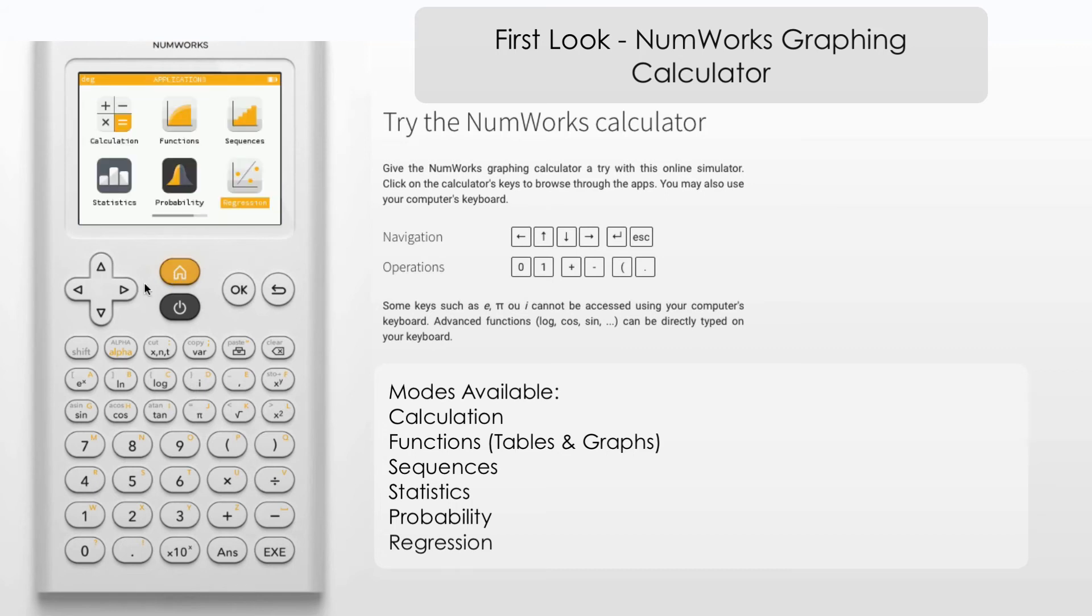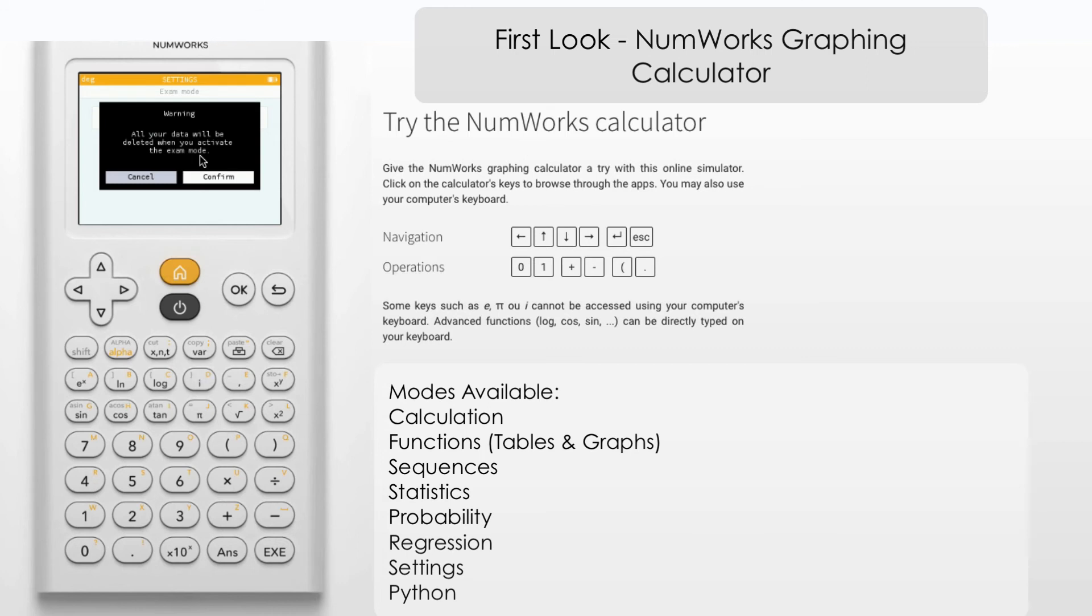I believe there is one more mode here, well two more modes. We've got settings here and Python. So let's just have a quick look in settings. We've got angle measure, always good to be able to change that. Just got degrees and radians, no gradians there. Result formats, also scientific, complex formats. We've got the Cartesian there or we have modulus and argument form there if you prefer. That's quite good. Language, English. Let's have a look what other languages are available. French, Spanish, German, Portuguese. Okay so quite good there, quite a good range. And exam mode, presumably this is a mode to prevent it from accessing the internet during exams. If you activate, okay, it will also then delete any data that you have stored.